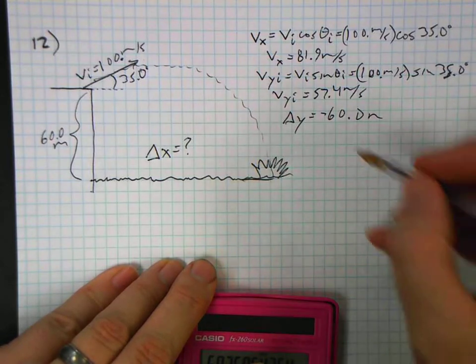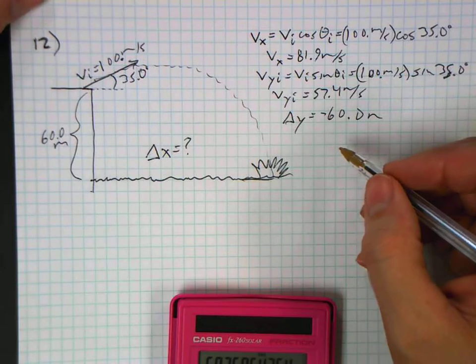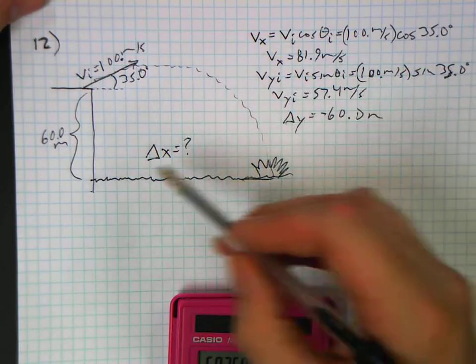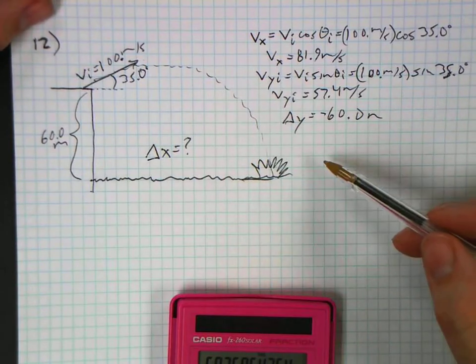Okay, so we're going to use the y direction to figure out how long it's in the air, and use the x velocity to figure out how far it goes out.